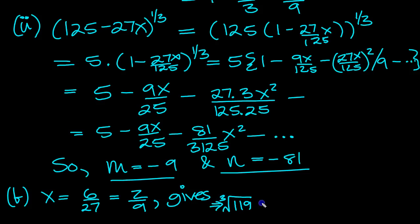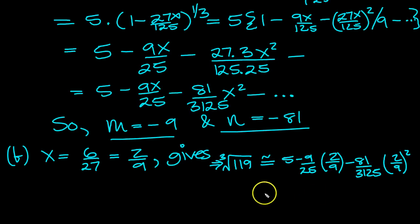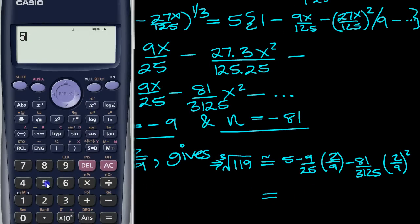The cube root of 119 is equal to, and our series, it will be 5 minus 9 over 25 of X, which is 2/9, minus 81 over 3,125, times 2/9 squared. So this will be approximately equal to, so let's see what that equals then. Tap it in the calculator, 5 minus 9 divided by 25 times, I'll put it in a bracket, 2 divided by 9, close bracket, minus 81 divided by 3,125, times by bracket, 2 divided by 9, close bracket, squared.